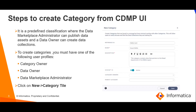Steps to create category from CDMP UI. A category is a predefined classification where a data marketplace administrator can publish data assets and a data owner can create data collections. To create categories, one must have one of the following user profiles: category owner, data owner, or data marketplace administrator. We can create a category from the UI by clicking on the new category tile as shown in the image on the right.